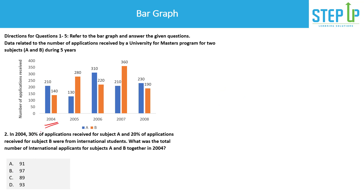Question 2: In 2004, 30% of the applications received for subject A and 20% of the applications for subject B were from international students. Subject A had 210 applications and subject B had 140. So 30% of 210 is 63 (since 21 × 3 = 63), and 20% of 140 is 28 (since 14 × 2 = 28).